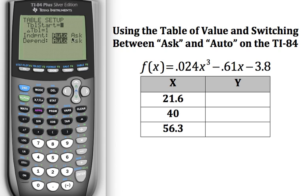This is my setup for my table. It tells me that my table is going to start at 2. I'm going to do increments of 1 and it is set to auto. The independent variable, which is your x variable, is set to auto. So it automatically generated values in the xy table that you saw in there.